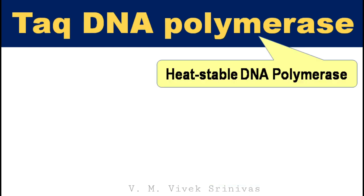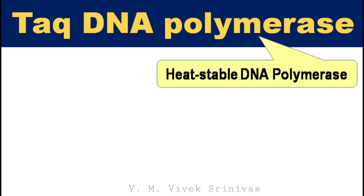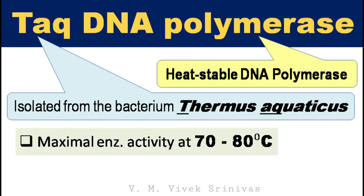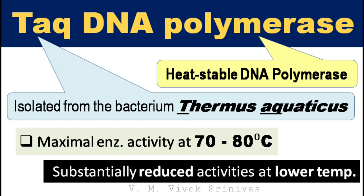In this technique, a thermostable DNA polymerase called Taq DNA polymerase is used. This enzyme is isolated from the bacterium Thermus aquaticus. It has maximum activity at 70 to 80 degrees Celsius, but its activity is substantially reduced at lower temperatures.